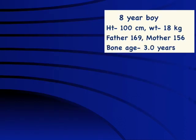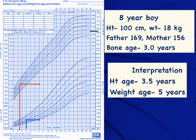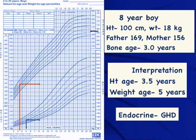This 8-year-old boy has a height of 100 cm and weight of 18 kg. Just a quick look at the growth chart makes it clear this is not nutritional — it is the height which is predominantly affected. Height age is around 3.5 years while weight age is 5 years. So this is a short and plump child. It would be a waste of money to do blood gas, electrolytes, tuberculosis workup, or celiac disease workup. This is a classical case of endocrine cause of growth retardation, most likely hypothyroidism or growth hormone deficiency — and when the workup was done, the diagnosis was growth hormone deficiency.